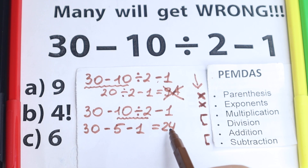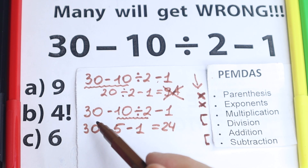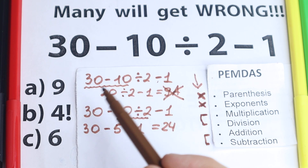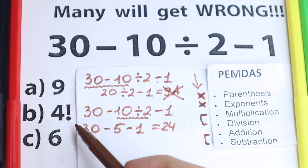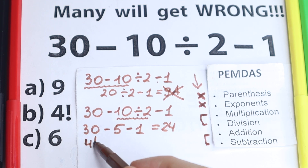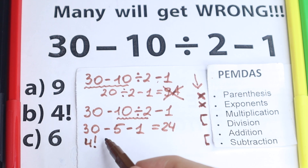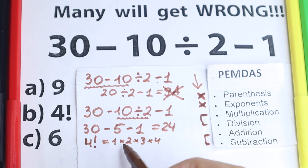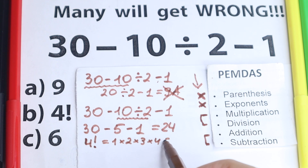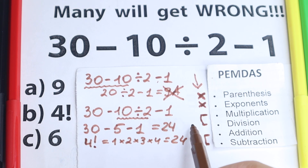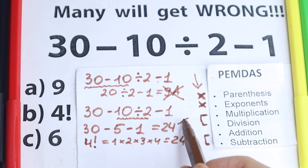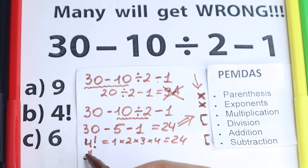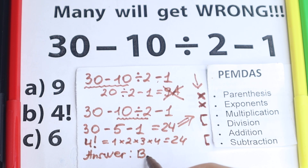So the correct answer is 24, but we need to solve this as a test and choose the correct letter. We have A — this is not 24. We have C — this is 6. Let's check option B, which is 4 factorial. We all know 4 factorial — this is the product 1 times 2 times 3 times 4. So: 1 times 2 is 2, 2 times 3 is 6, 6 times 4 is 24. So according to the correct order of operations — PEMDAS in our case — the correct answer is 24, and in our test the correct answer is option B, which is 4 factorial.